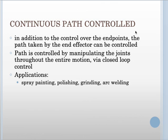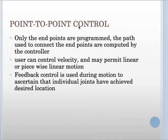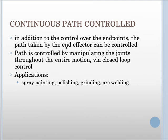In continuous path control, in addition to controlling the end points, the path taken by the end effector is also controlled by manipulating the joints throughout the entire motion via closed-loop control. Applications for continuous path control robots include spray painting, polishing, grinding, and arc welding — tasks where the robot must follow a precise continuous trajectory.